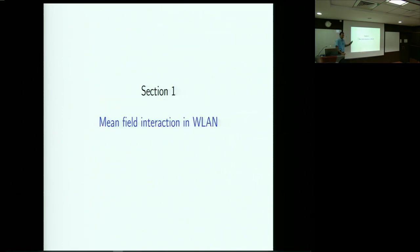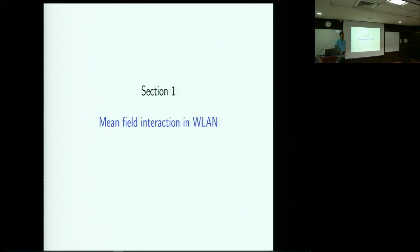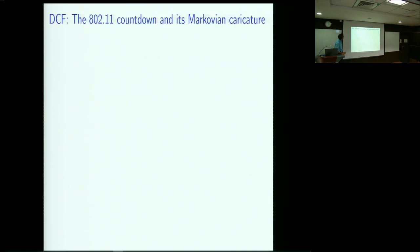With that abstract introduction, I'm now going to describe a mean field interaction in the context of wireless LAN. There are also similar things in the context of spin flip systems and infection spread systems, but we will discuss in the context of wireless LAN, sticking to the simplest possible system — the oldest wireless LAN system. That's the distributed coordination function, a countdown mechanism, and I'm going to look at a Markovian caricature of this countdown mechanism.